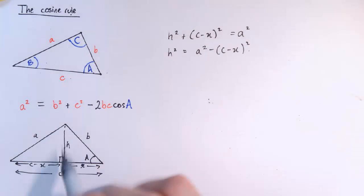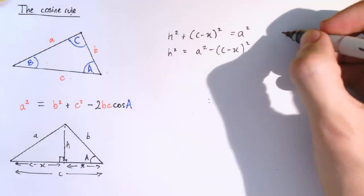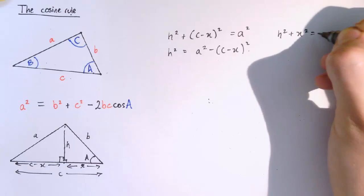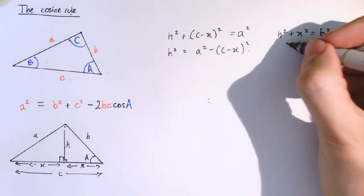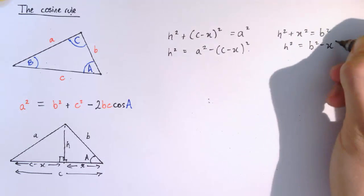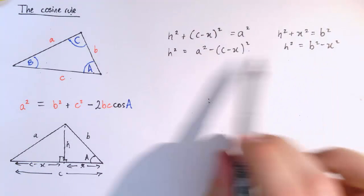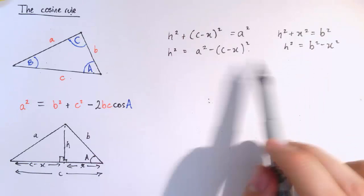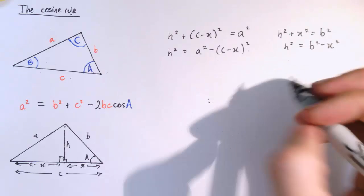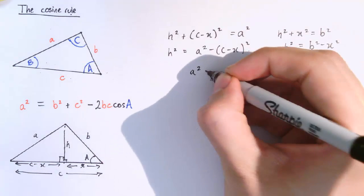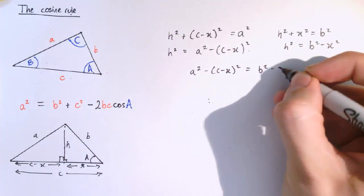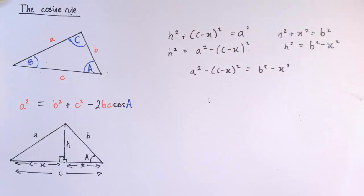Or I could look at h as part of this triangle where by Pythagoras theorem, we'd have that h squared plus x squared equals b squared or h squared equals b squared minus x squared. So I've got two different ways of writing h squared here. This one and this one. So we can put them equal to each other. So a squared minus (c minus x) squared equals b squared minus x squared.